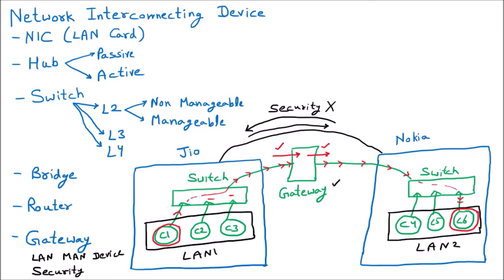One important thing: gateway is the LAN or MAN connecting device and it provides security. We can assume that it is like a firewall, but a firewall is software that deals with malware and unethical access, whereas gateway is for the connection purpose — connection with security. To connect two LANs we can use a gateway or bridges. The difference is that a bridge only stores and forwards data, but the gateway sends it with security permissions.